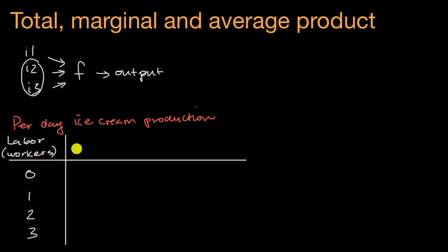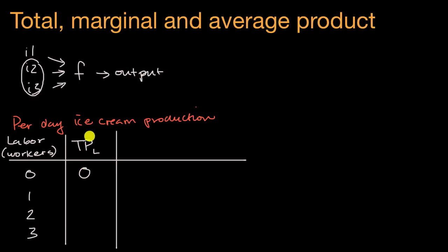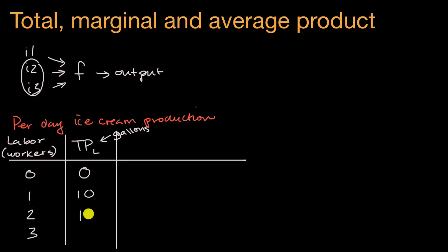Our next column is our output, and we'll call that our total product as a function of labor — TP standing for total product. If we have zero people working in our ice cream factory, we produce zero gallons. Our output is in gallons per day. If we have one worker, we produce 10 gallons a day. If we have two workers, we produce 18 gallons a day. And if we have three workers, we can produce 24 gallons a day.